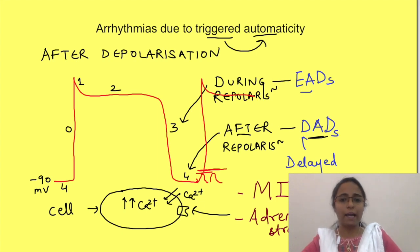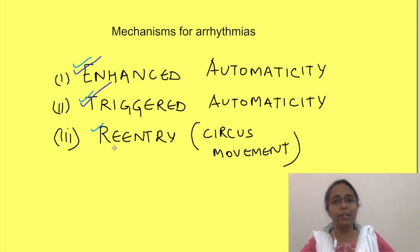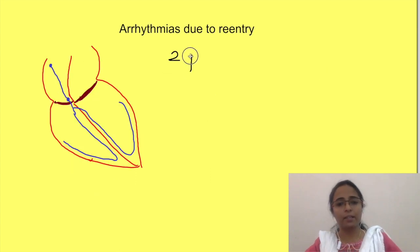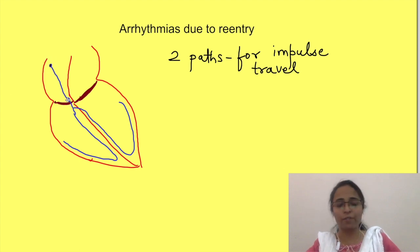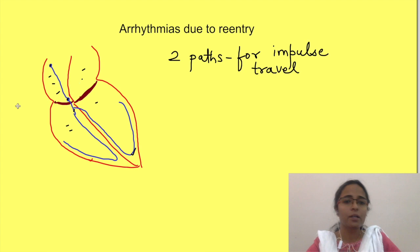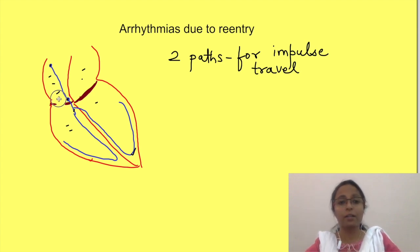So till now we have discussed tachyarrhythmias which may occur due to enhanced automaticity and due to triggered automaticity. Finally, let's talk about the third type of arrhythmias which may occur due to re-entry. Re-entry arrhythmias can occur when there are two paths through which impulses can travel. Normally, the impulse travels along the conduction pathway only — from the SA node to the AV node, to the bundle of His, and then to the Purkinje fibers — and via this conduction system it depolarizes the atria and ventricles.